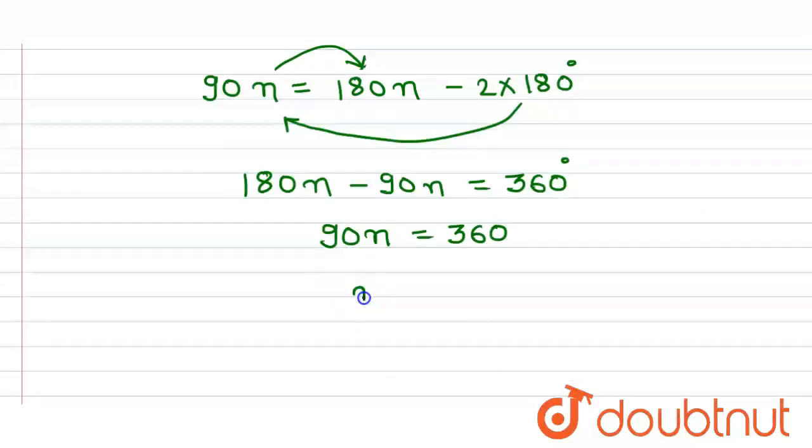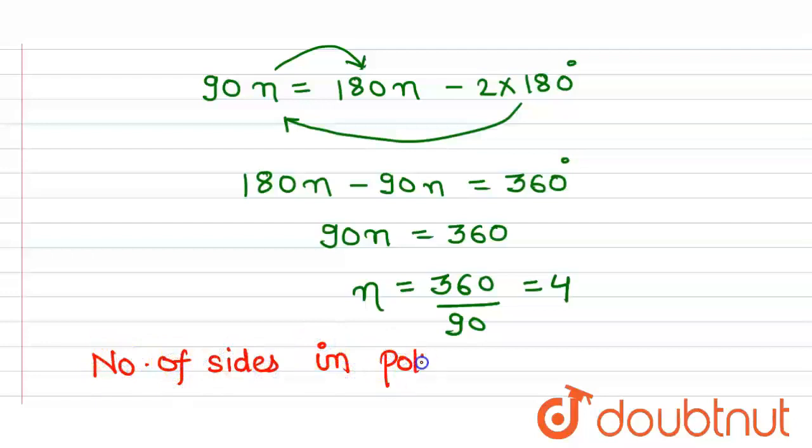So n turns out to be 360 divided by 90, which is 4. So the number of sides in the polygon is 4.